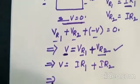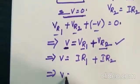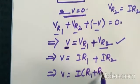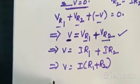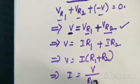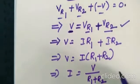So this can be written as what? V equal to, you can take I as a common. So this is R1 plus R2. So now what is the formula for I? I which is equal to V by R1 plus R2.